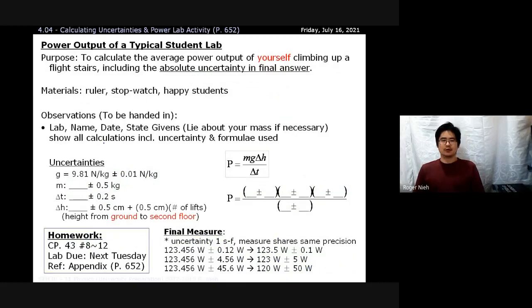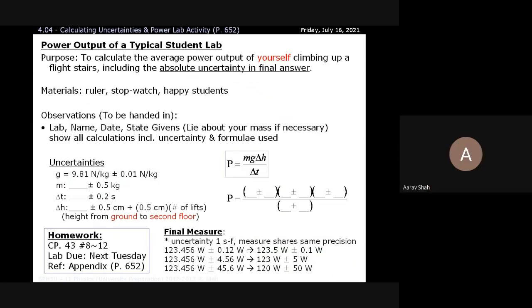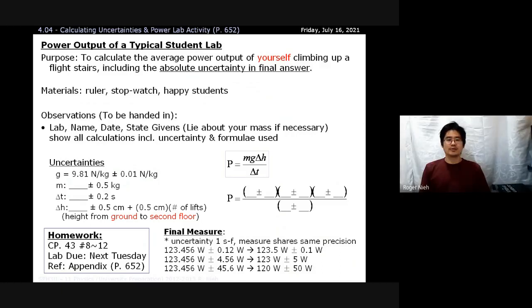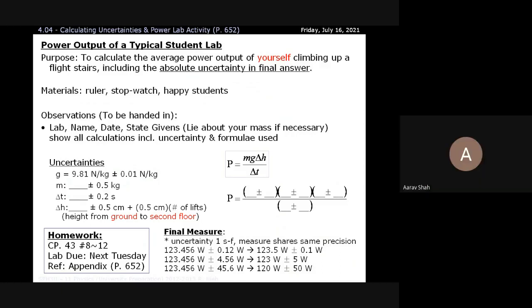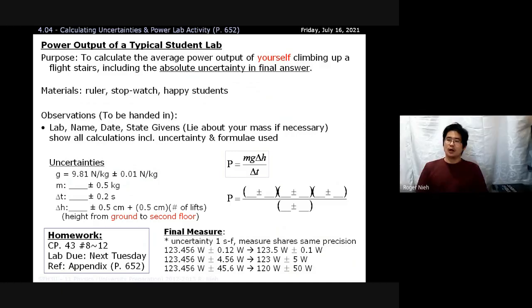A student asked: when multiplying we add percent errors, and when dividing do we subtract? No — errors only ever get worse, so you always add them. For the height, just one sentence telling me how you got to your value. If you want to show the math behind it, that's fine — I just want to see that you thought about why your error is what it is.